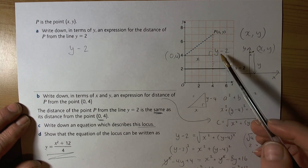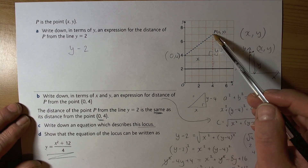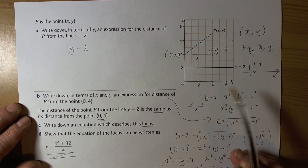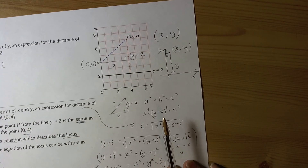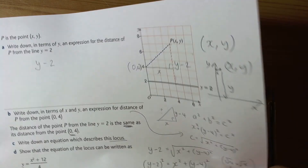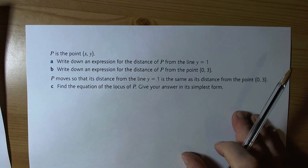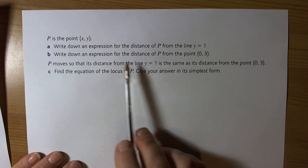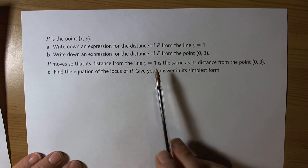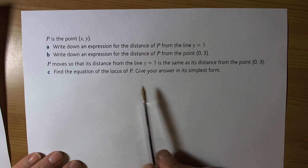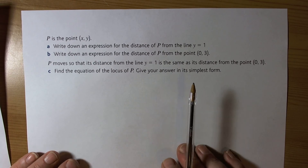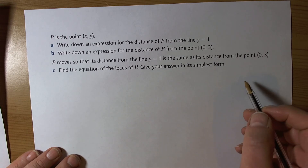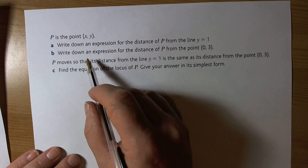That's an example of how locus works on a graph, creating equations for a point moving according to given rules. Here's another example — pause the video, try the question, then play it again to check your answers.